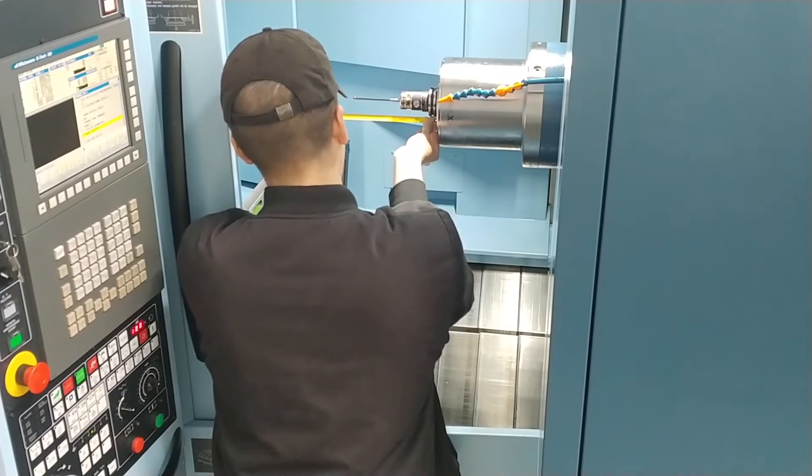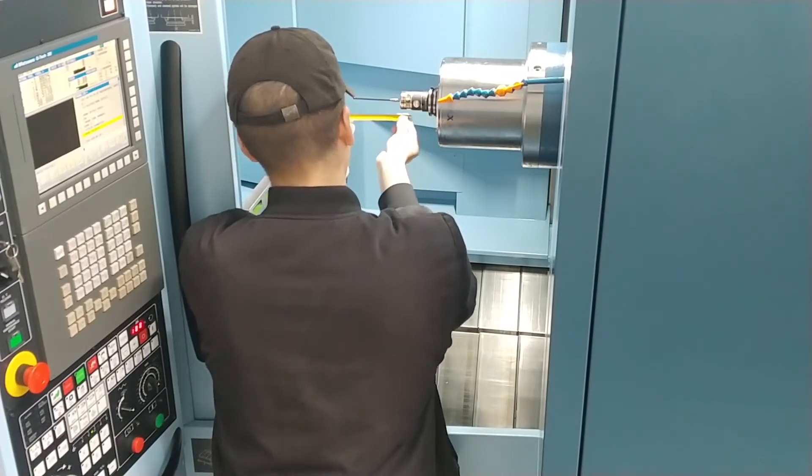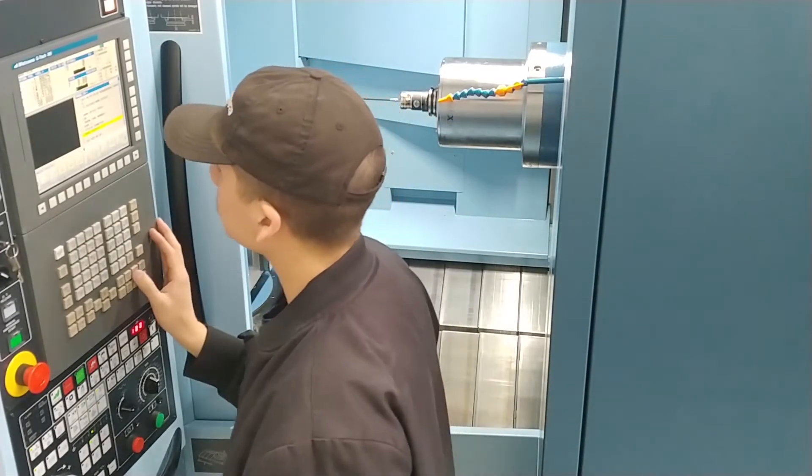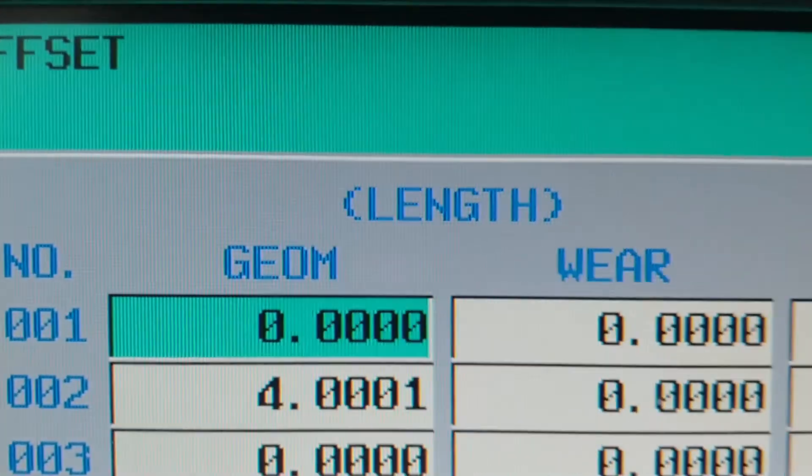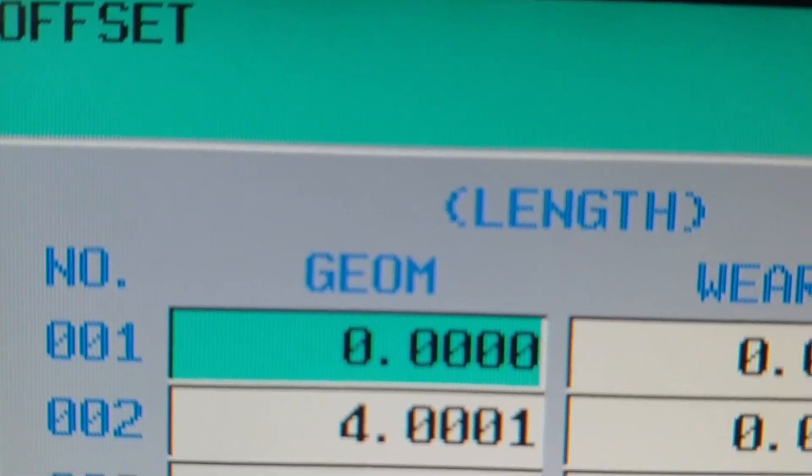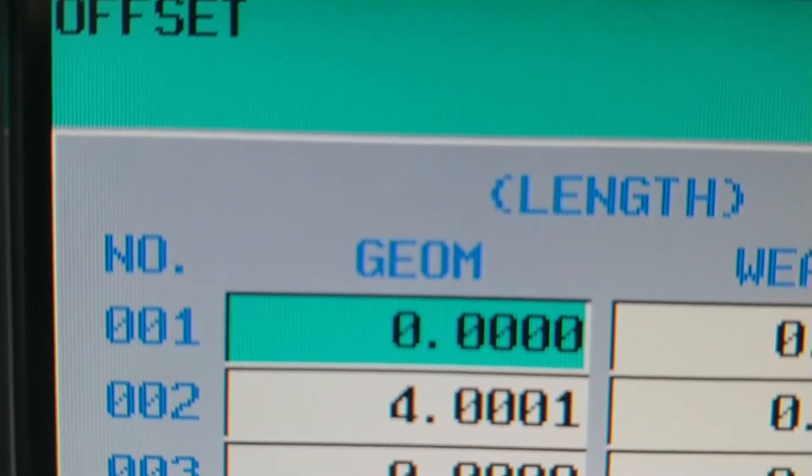With a ruler or tape measure find the approximate length from the spindle face to the tip of the probe. Open the tool offset page and type this number into the length geometry column for the tool number of the probe.